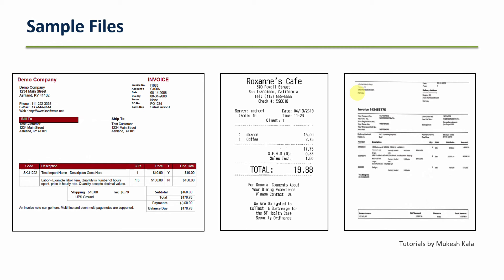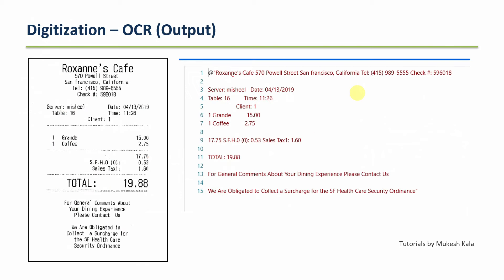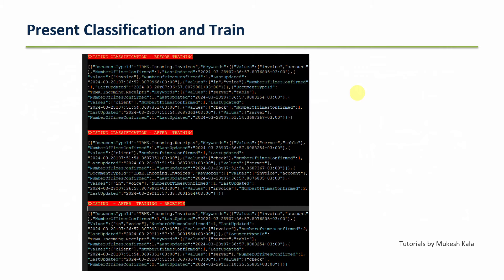We started with a use case about the reimbursement process, with two invoices and one receipt. We created a taxonomy.json, then used digitization to extract data in a machine-readable form using the DU framework. After that, classification determined whether each document is an invoice or receipt. In the last video, we looked at the present classification station and trained the classifier to increase the confidence score.